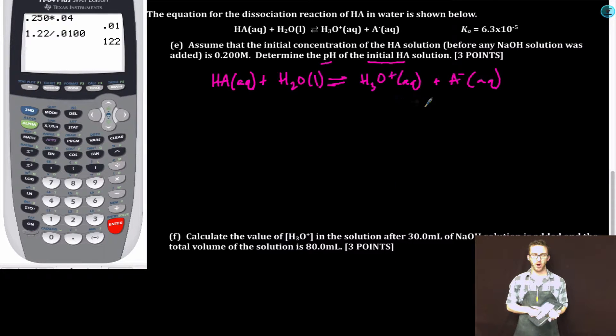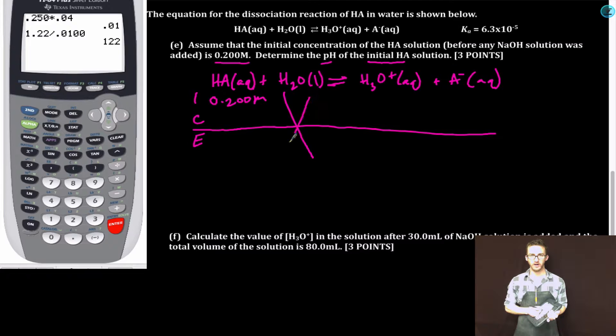I'm going to rewrite my equation. Set up my ice table. We're told the initial concentration is 0.200 molar. Not going to worry about the water. These will each be zero initially. My change in concentration is going to come based on the stoichiometry, all one to one. Combine initial and change to come up with my equilibrium concentrations.